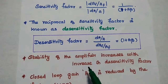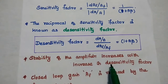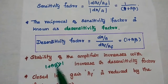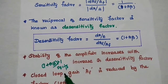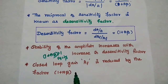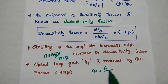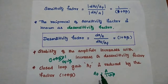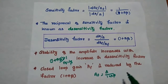Whenever 1 plus A·beta is greater than 1, the gain Af equals 1/beta. The closed-loop gain Af is reduced by the factor 1 plus A·beta. That is, Af equals the open-loop gain A divided by (1 plus A·beta). So the negative feedback amplifier gain is reduced from the open-loop gain by the factor 1 plus A·beta.